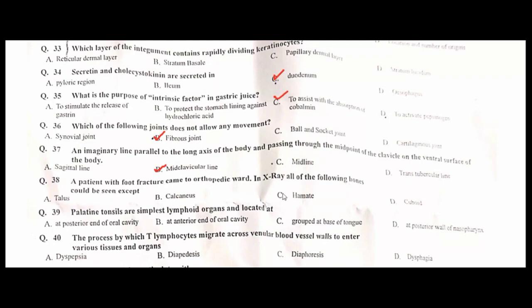A patient with foot fracture came to the orthopedic ward. An X-ray of the plantar bones could be seen except the hamate. C is the correct option. Palatine tonsils are simple lymphoid organs located at the posterior end of the oral cavity. A is the correct option.